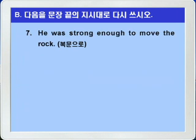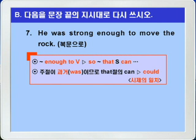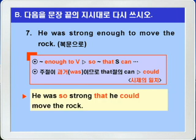7번입니다. He was strong enough to move the rock. 'enough to+부정사'는 '뭐뭐할 수 있을 만큼 뭐뭐한' 의미이니까, 그는 그 바위를 움직일 수 있을 만큼 힘이 셌다. 복문으로 바꾸려면 'so ~ that ~ can' 구문을 씁니다. 주절이 과거 was이니까 can은 시제일치에 따라 could가 되어야 합니다. 정답: He was so strong that he could move the rock.